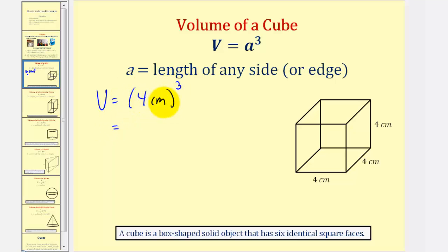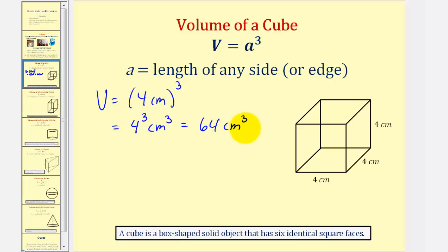Notice here we cube the four and cube the units, so this would be four to the third times centimeters cubed. Four to the third is equal to 64, and therefore the volume is 64 cubic centimeters. By leaving the units in the formula, we won't forget that the units will always be cubic units. This means that 64 cubic centimeters would fit perfectly inside this cube.